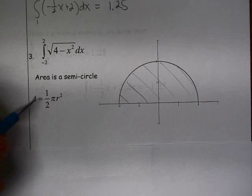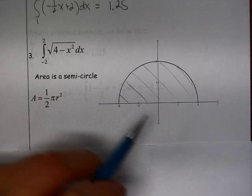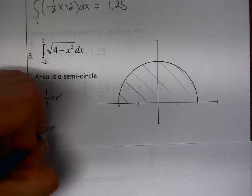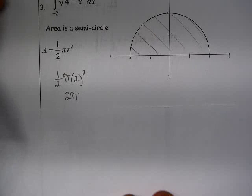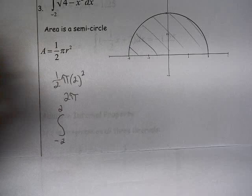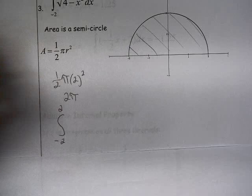All right, so the area here is going to be 1/2 pi r squared. All right, so 1/2 pi times the radius is 2. So 1/2 times 4, we get 2 pi. So the definite integral from negative 2 to 2 of the square root of 4 minus x squared dx equals 2 pi.